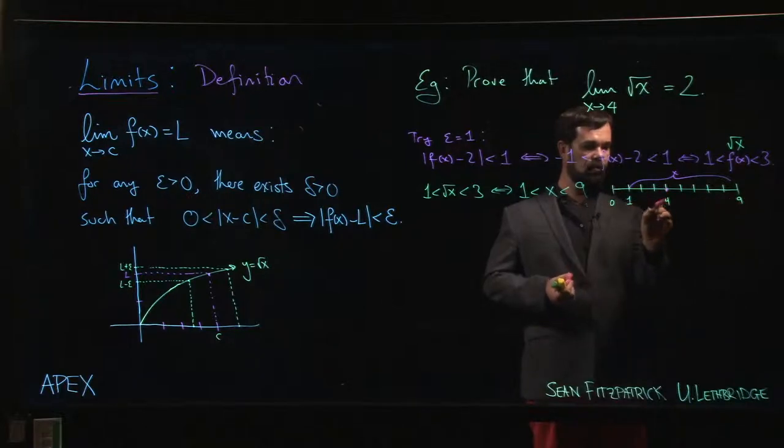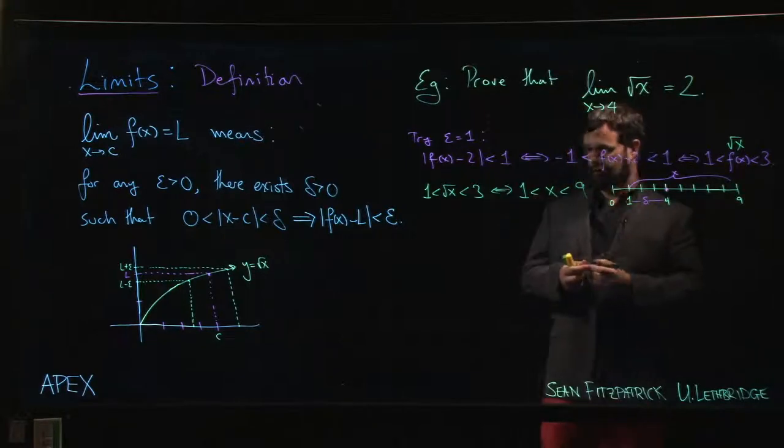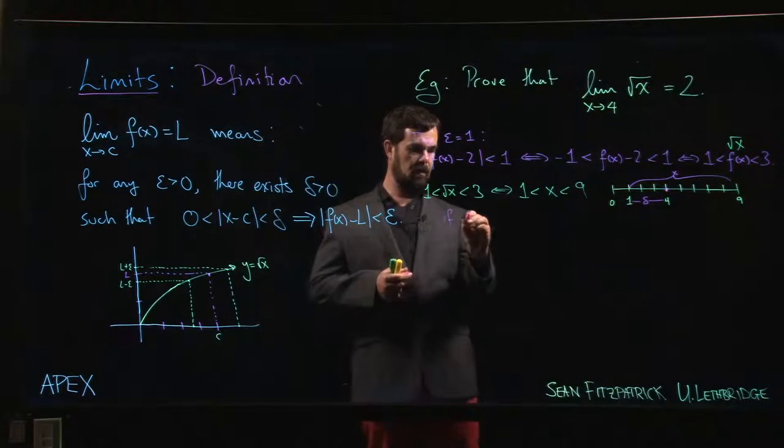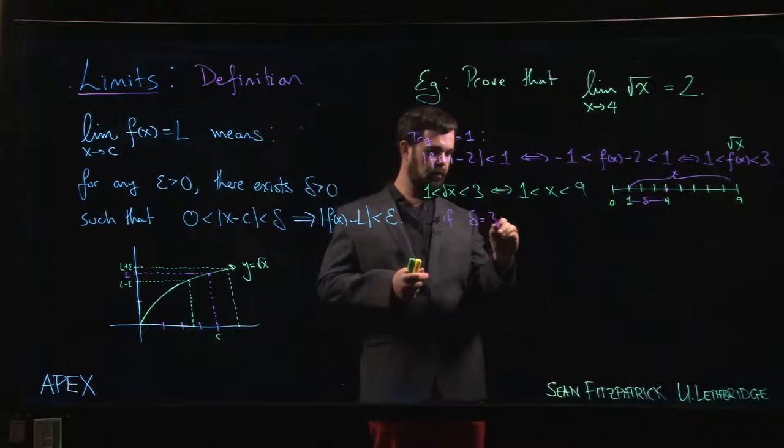This distance from here to here, that's going to be my delta. It's the smaller of the two. So I can say that if delta is—so that distance from one to four is three.